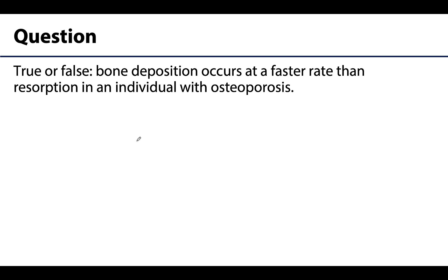Before we finish, let's review a core concept. True or false: bone deposition occurs at a faster rate than bone resorption in an individual with osteoporosis. The correct answer is false. It is actually bone resorption that occurs at a faster rate than bone deposition in an individual with osteoporosis. If you missed this, make sure to review it again, and please reach out with any questions.